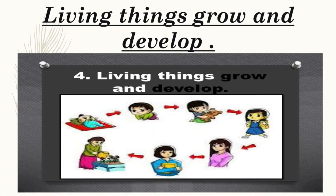The next one is that living things grow and develop. When we say grow and develop, it means from small going to adult. Like for example, in the picture here, these are the stages of development of a human from baby until adult. That is the characteristic of a living thing.